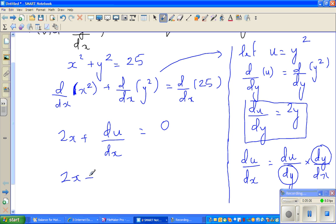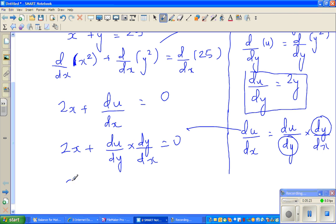So this is 2x plus, so what is du/dx? It is du/dy times dy/dx = 0. I will return from here. So this becomes 2x plus, now what is du/dy? du/dy is 2y. So we say 2y times dy/dx = 0.